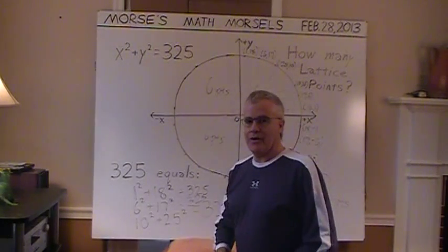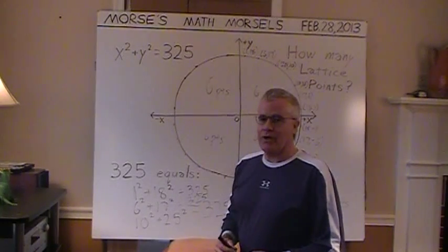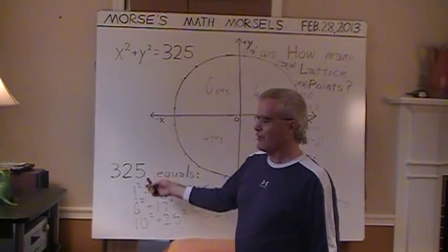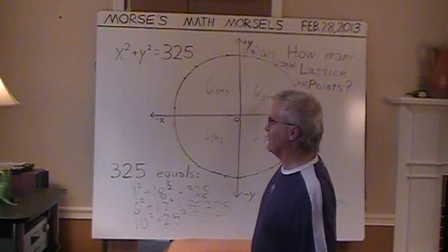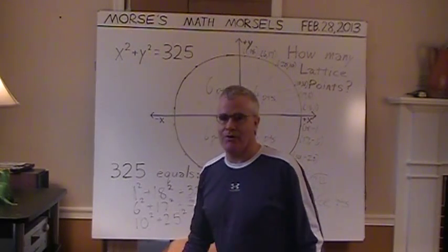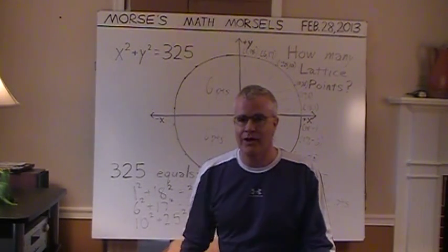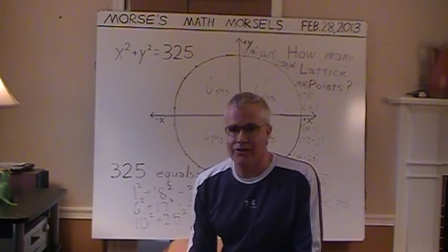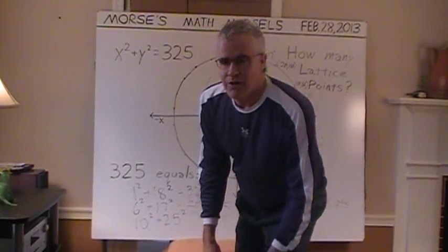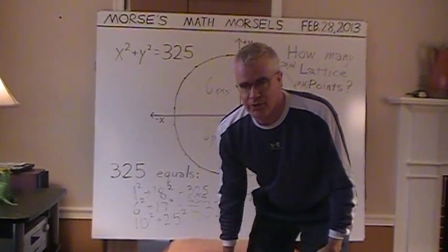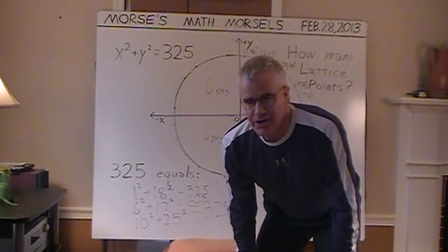So for those of you who like lattice points and who like drawing graphs of circles, I like that number 325 because you can easily figure out and plot a whole bunch of those lattice points and then draw a nice smooth circle connecting all 24, all sitting around the great circular table. Thanks for viewing.